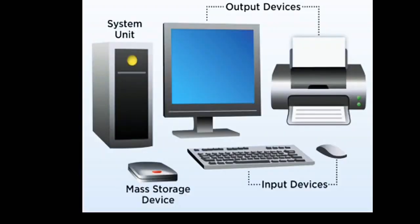Let us learn the functions of a computer. The main functions of a computer are: first, input; second, processing; third, storage; and fourth, output. Now let us understand what these terms mean — what actually input, processing, storage, and output are.